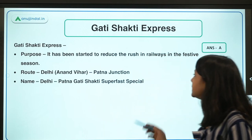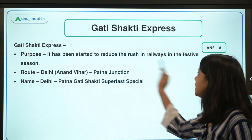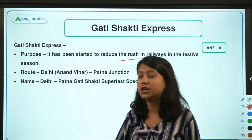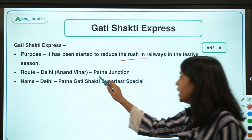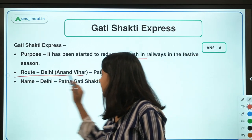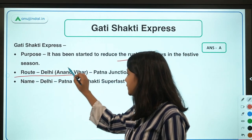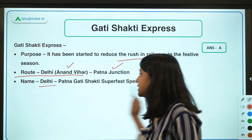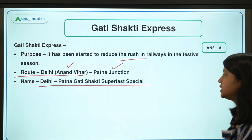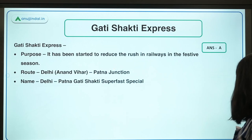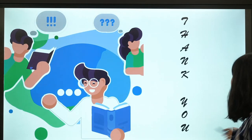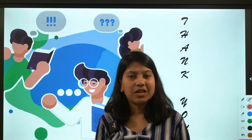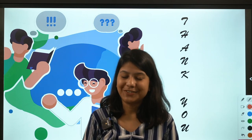The route of the Gati Shakti Express is Delhi to Patna — specifically Anand Vihar to Patna Junction. Its full name is Delhi-Patna Gati Shakti Superfast Special. The purpose is to reduce rush in railways during the festive season, with festivals like Diwali and Chhath approaching. Thank you for watching this video.